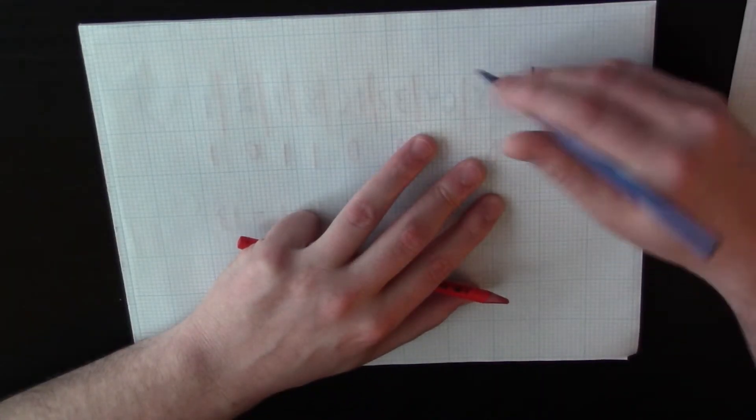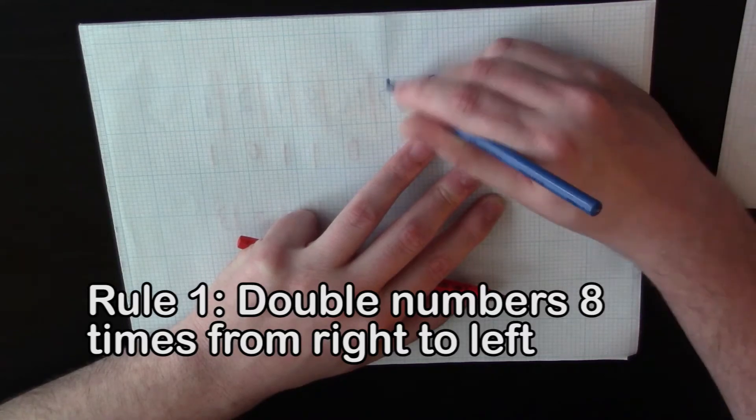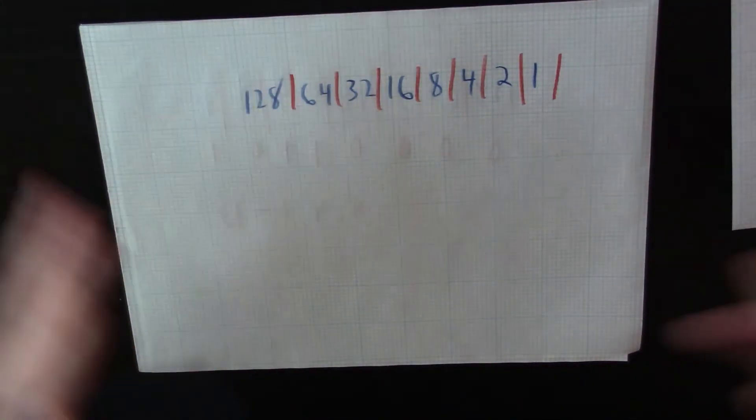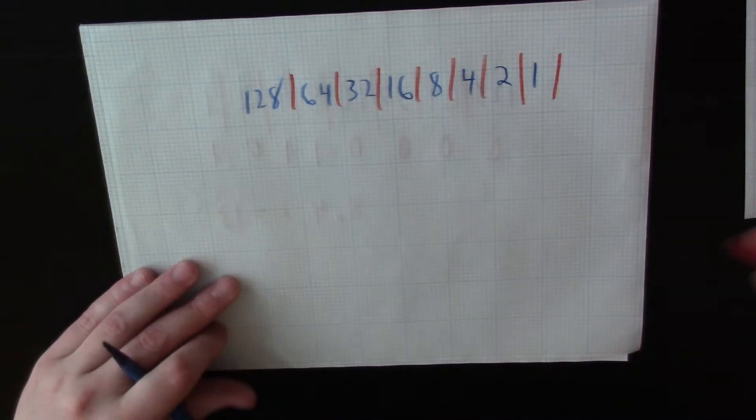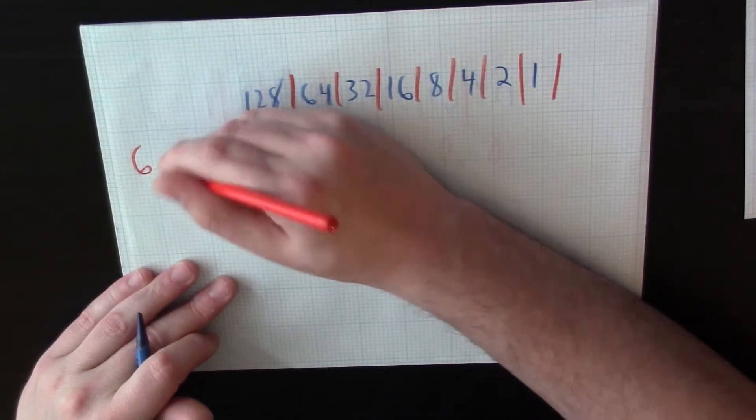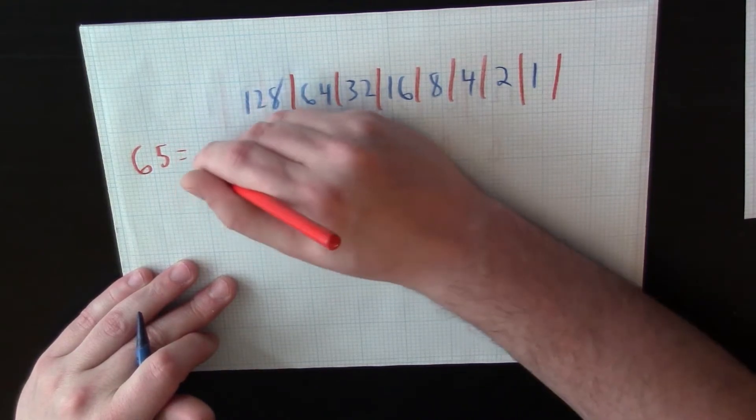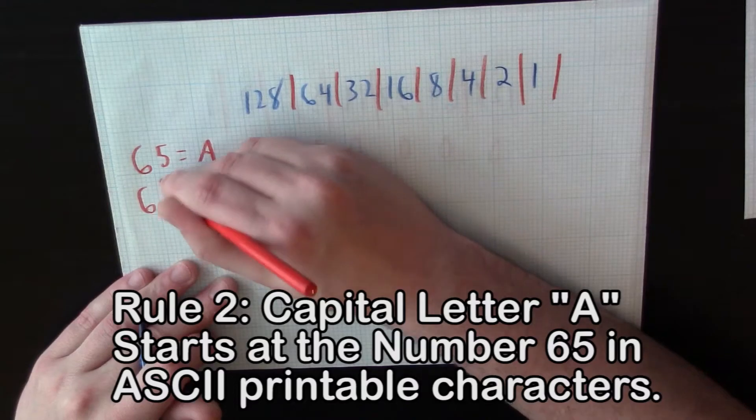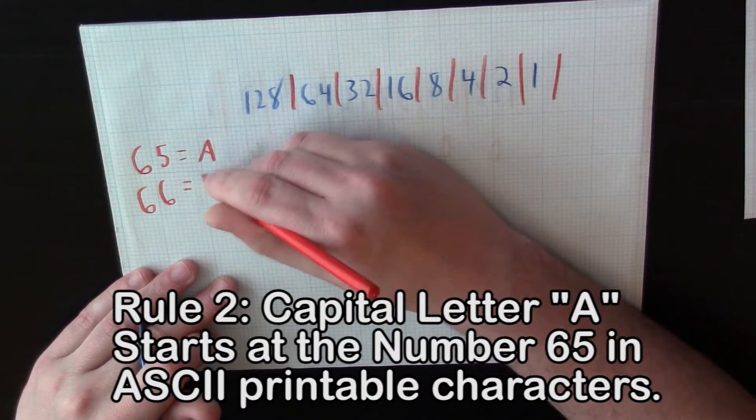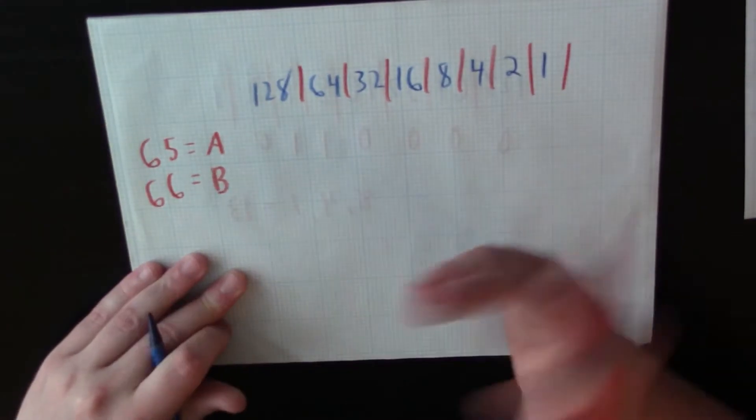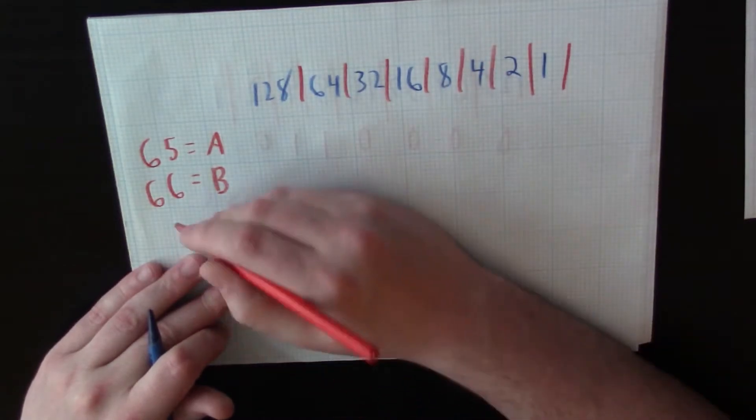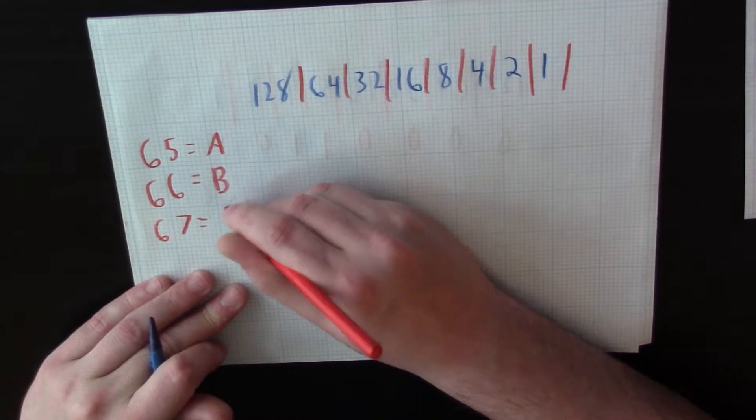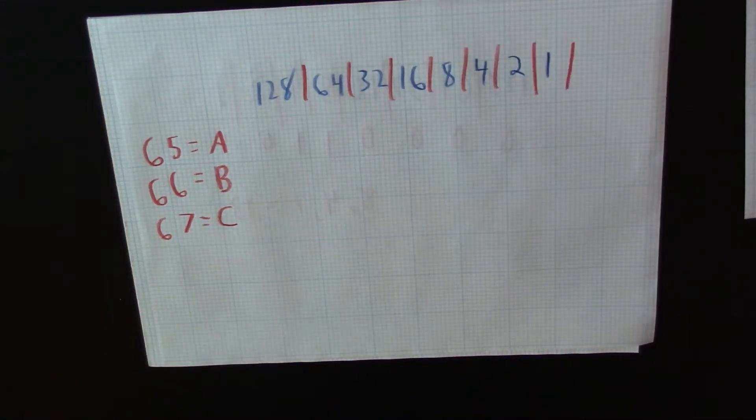So we have our first rule. And we have our second rule. 65 equals A. Well, 66 equals B. Can you guess what 67 is? That's right, 67 equals C. Okay, cool.